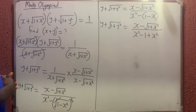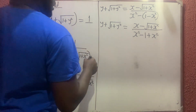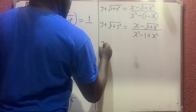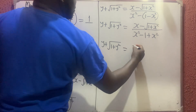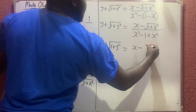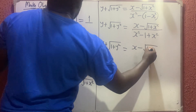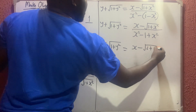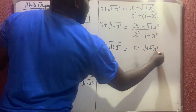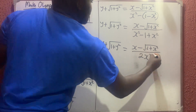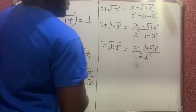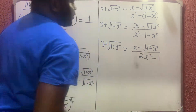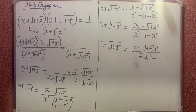So what we have now is: y plus the square root of 1 plus y squared equals x minus the square root of 1 plus x squared, divided by 2x squared minus 1.